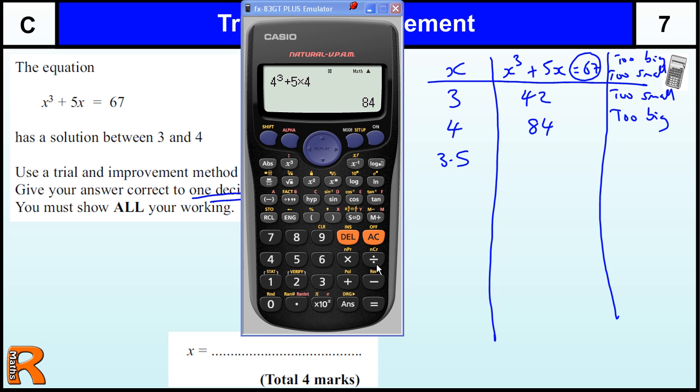The classic value to use is halfway, so 3.5 cubed plus 5 times 3.5. We're starting to get fractions here, but we can change it up to a decimal, 60.375. We want 67, so that's too small.